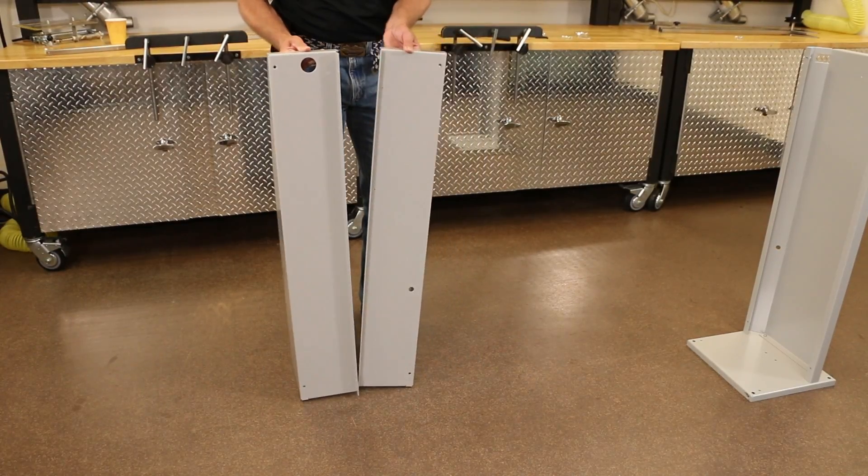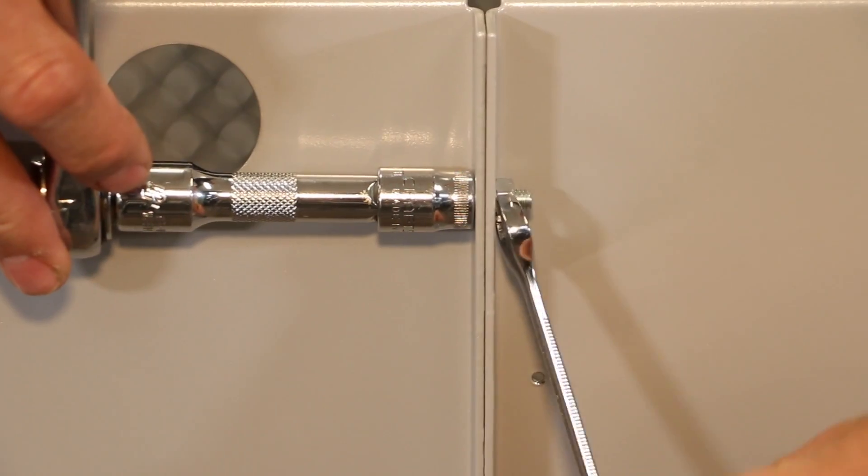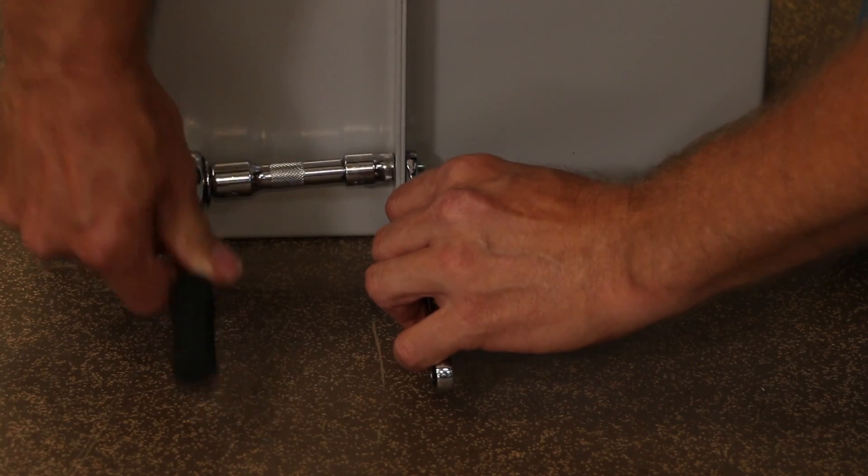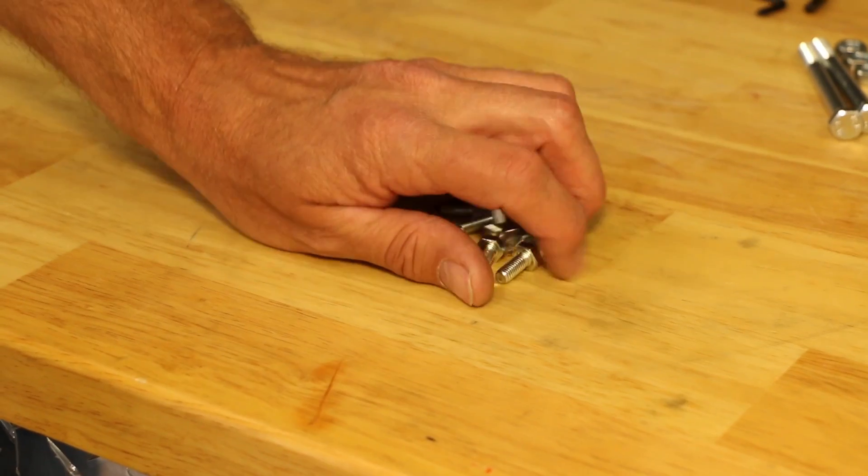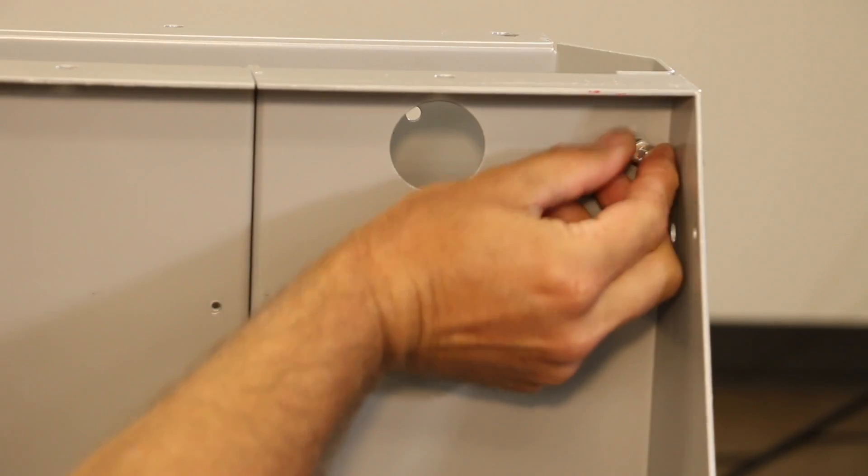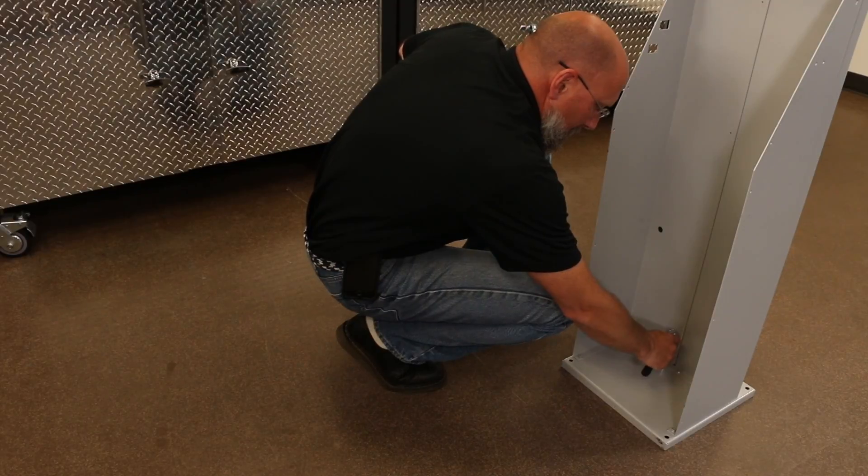Next, attach the side pieces together with the supplied hex head bolts at two locations. To complete the stand assembly, connect the sides to the base and then the front. Hand tighten all fasteners before securing with a wrench.